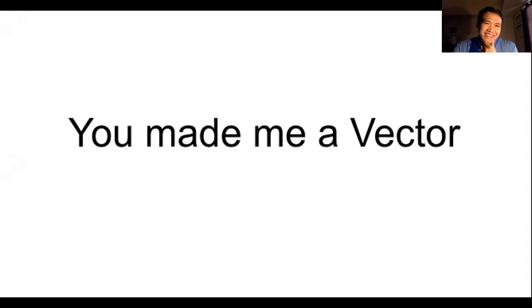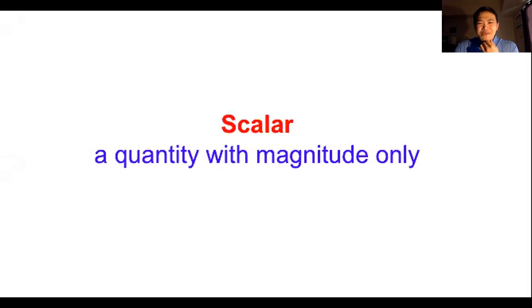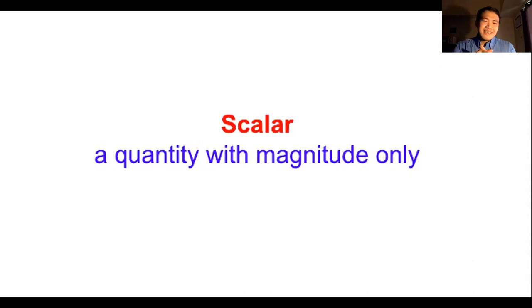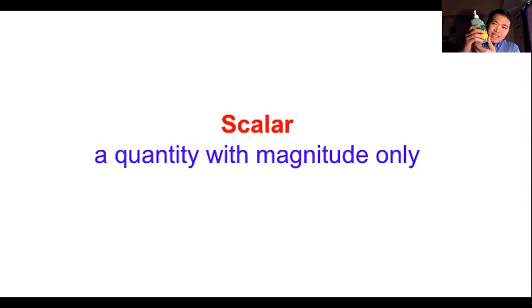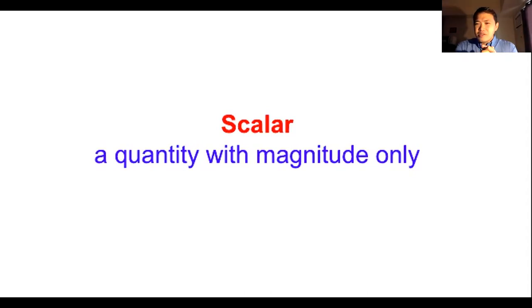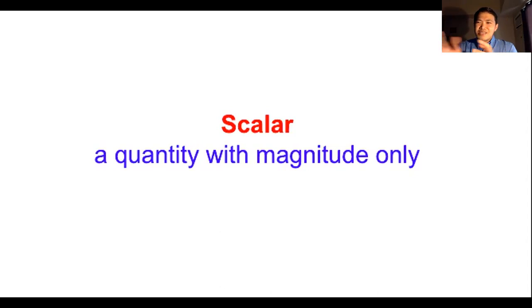Scalars are quantities with magnitude only — no direction. Examples are speed (how fast), mass (weight or bigat), energy, volume (the space occupied by an object, whether liquid or solid), and temperature — you put your thermometer here to determine the temperature.